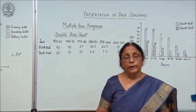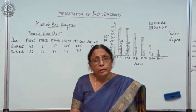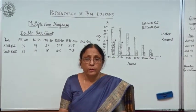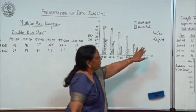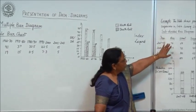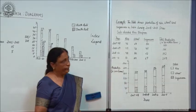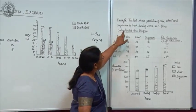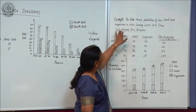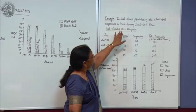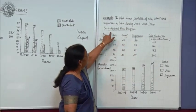Now we will come to another type of diagram. This we call sub-divided bar diagram or sub-divided chart. Here I have given one example. The given table shows production of rice, wheat, and sugar cane in India during 2008 to 2011 — now draw a sub-divided bar diagram.